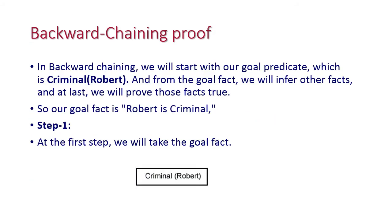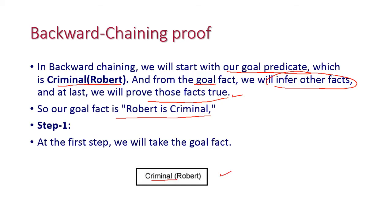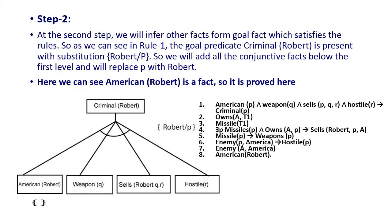In backward chaining we start from the goal predicate first. Our goal is Criminal(Robert), and from this goal we will infer other facts and prove them true. So the first step is Criminal(Robert). In the second step, we infer facts from the goal using rule 1. The goal predicate Criminal(Robert) matches Criminal(p) in rule 1, so we substitute p with Robert.